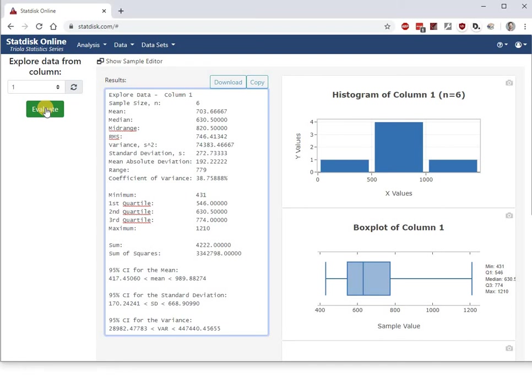There's a whole bunch of other information here, some of which we'll use in the future, some of which we won't. Notice they made a histogram over here. They didn't do a great job with the histogram because there's gaps between the bars. It's really not a proper histogram. There's a box plot, which we'll talk about later. And there's lots of other information that we will talk about later.